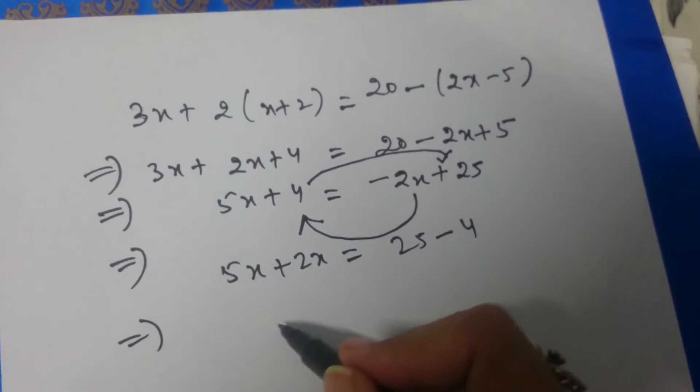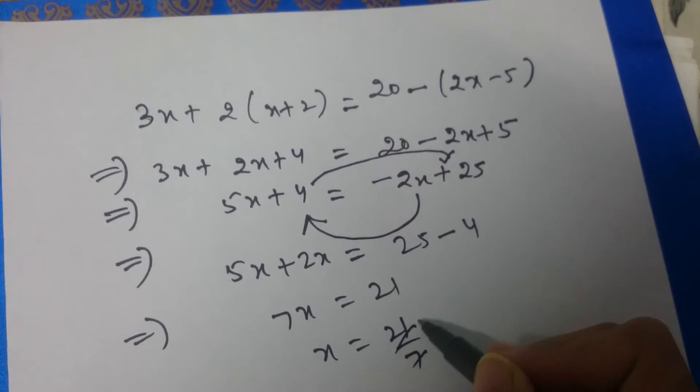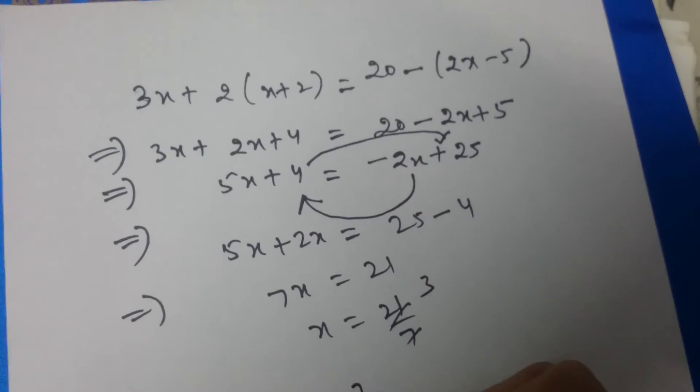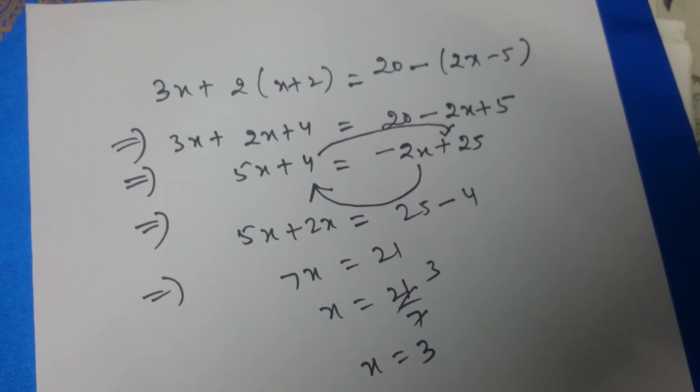This implies 7x is equal to 21. So, x will be 21 by 7. Simplify this. So, the solution of given linear equation in one variable is x is equal to 3.